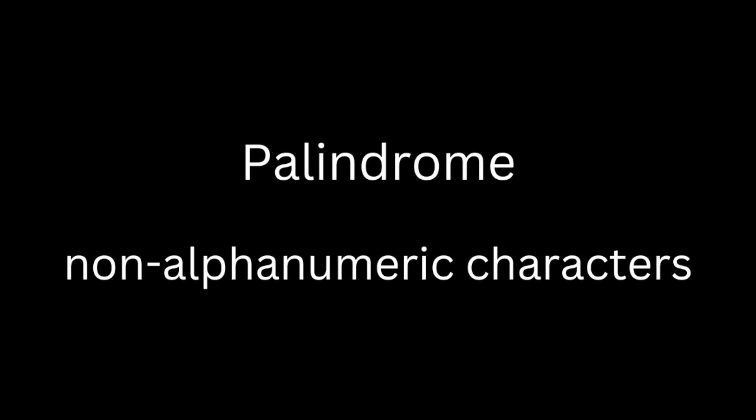A palindrome is a word, number, phrase, or other sequence of symbols that reads the same backward as forward — such as the word 'racecar', which we can read the same backward as forward. We also need to ignore all non-alphanumeric characters like comma, space, exclamation, etc.